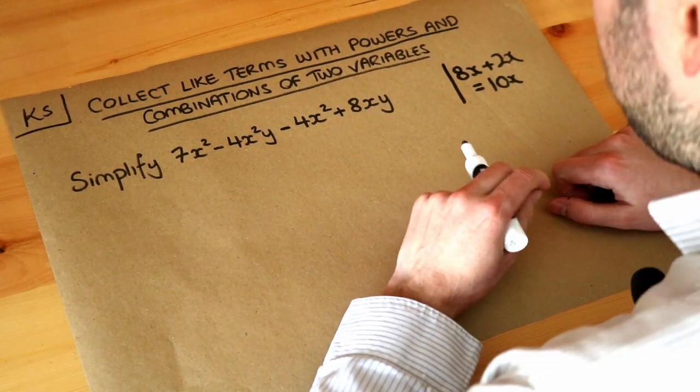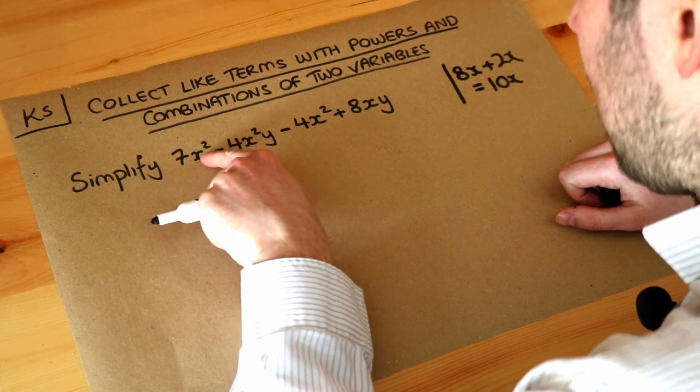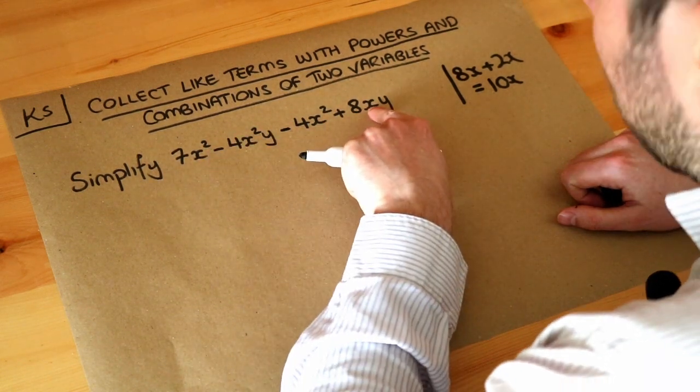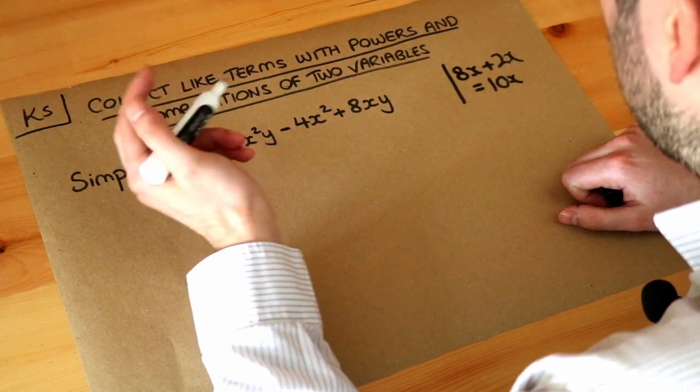Now what are the rules here? With this it's a bit more complicated because we've got different powers of x. We've got like x squared and then we've got x without a power in it, and sometimes we have y in there and sometimes we don't have y in the terms.